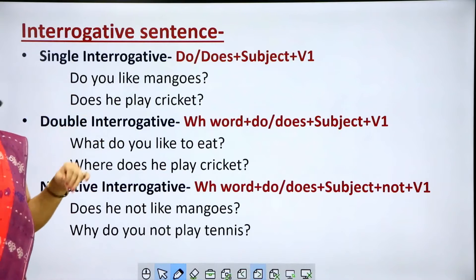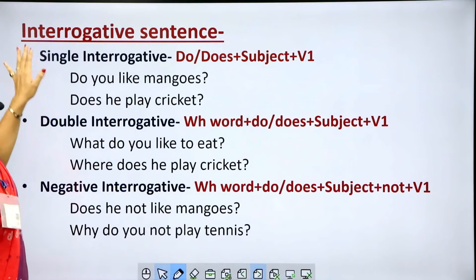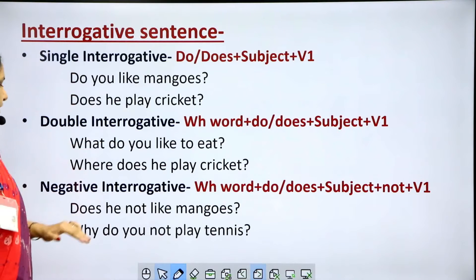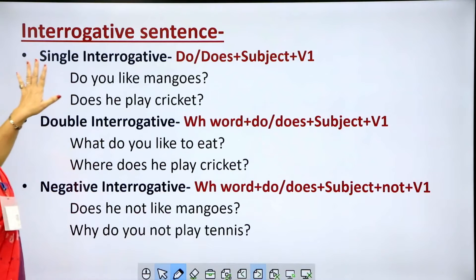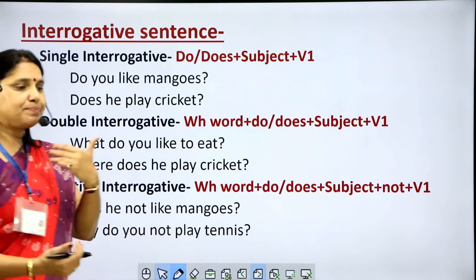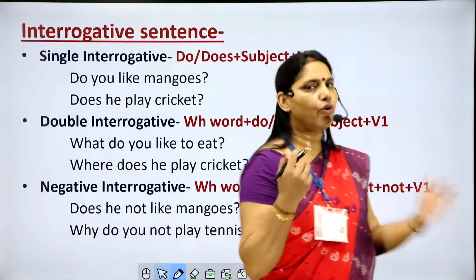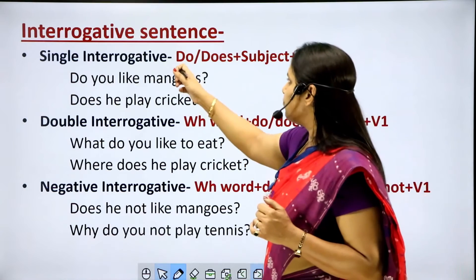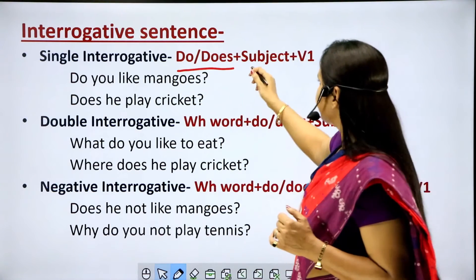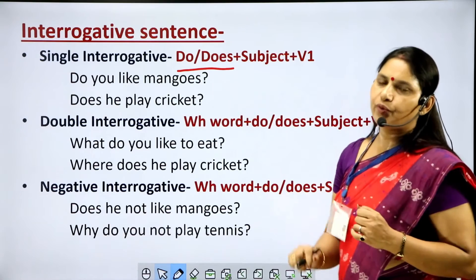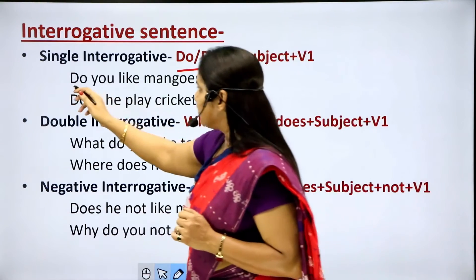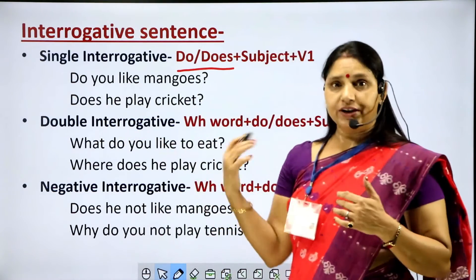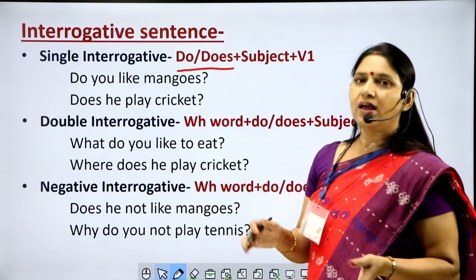Now, interrogative sentences. Students, interrogative sentences are of three types: single interrogative, double interrogative, and negative interrogative. A single interrogative sentence can be answered in yes or no and starts with a helping verb. In this case, we have 'do' or 'does' as the helping verb, then the subject, then V1. Examples: 'Do you like mangoes?' 'Does he play cricket?' You know where to use 'do' and where to use 'does'.